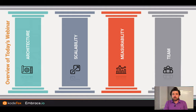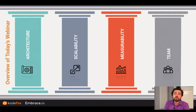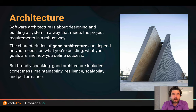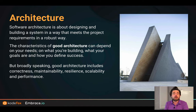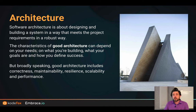We're going to talk about the four pillars of building a great mobile app. I'm going to talk about the first two: architecture and scalability. Software architecture is about designing and building a system in a way that not just meets the project requirements but does so in a robust way. The characteristics of good architecture can depend on your needs — what particular things are important to you or your product.